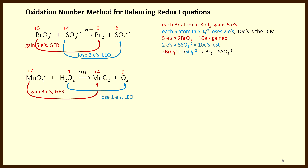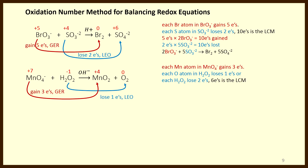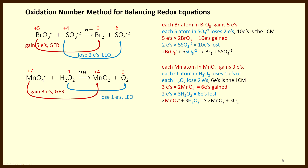Let's apply the oxidation number method to the second example. Each permanganate atom is gaining 3 electrons. Each hydrogen peroxide molecule (H2O2) is losing 2 electrons. Therefore, 6 is the lowest common multiple of 3 and 2. Two permanganates each gaining 3 electrons gives 6 electrons gained, and 3 peroxide molecules each losing 2 electrons gives 6 electrons lost. From this we write a stoichiometric ratio of 2 permanganates for every 3 peroxides.